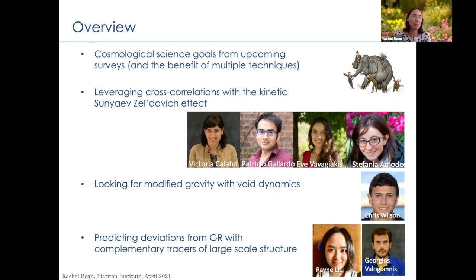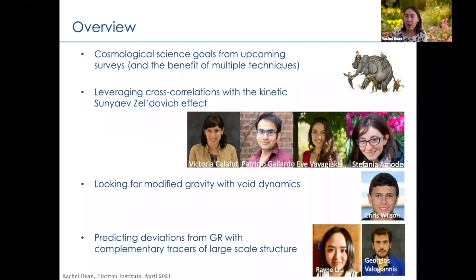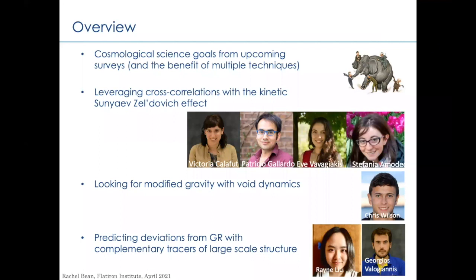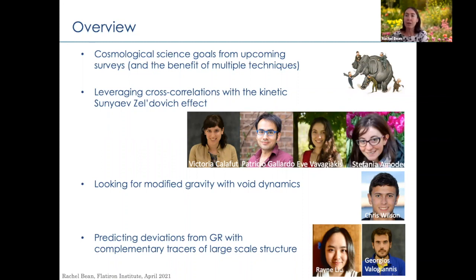I'm going to first start talking about some work on the kinetic Sunyaev-Zel'dovich effect — for those of you who don't work in that area — to give an idea of why we're very interested in using that technique. Then I'm going to talk about how we might use spectroscopic surveys, not to look at clustering regions, but to look at void regions and use those as interesting environments for testing gravity. Finally, I'll talk about combining different tracers together to try to offset and find an interesting interplay between different scales, tracers, and redshifts to test constraints on gravity.